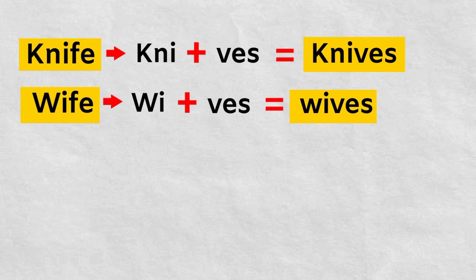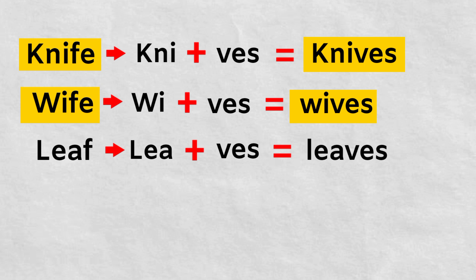Let's take another example. Leaf. Look at the last alphabet. It is F. We will remove the F and we will add VES. So it will become leaves. L-E-A-V-E-S which is the plural form of leaf.